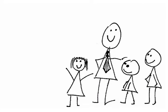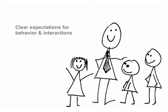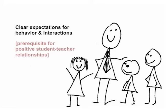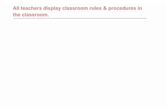Have you seen classrooms where students and teachers seem to really enjoy one another? How are these positive social interactions created and sustained, and how do they contribute to a well-managed classroom? It has a lot to do with rules and procedures and the expectations for behavior that a teacher establishes. Expectations for behavior and interactions are a prerequisite to positive student-teacher relationships, and it is also our first success indicator of Part 3: All teachers display classroom rules and procedures in the classroom.